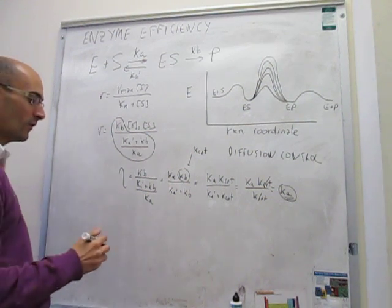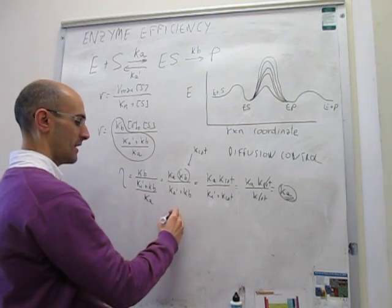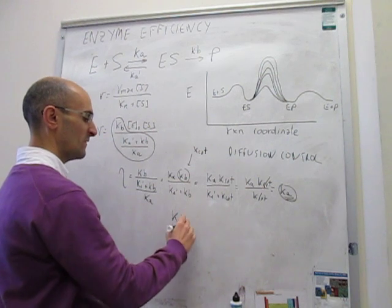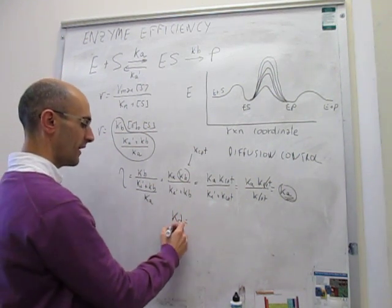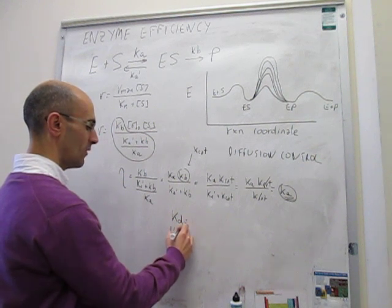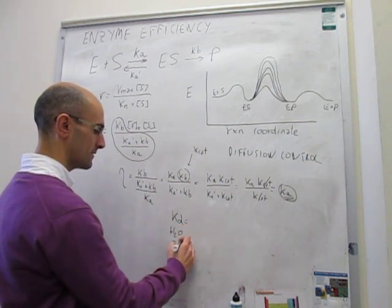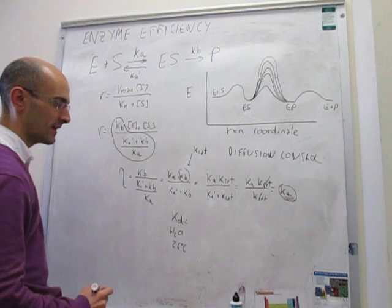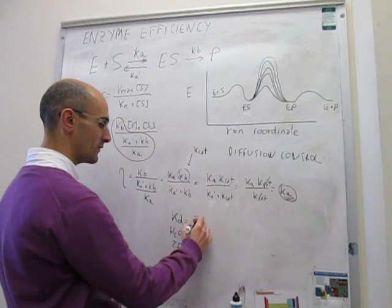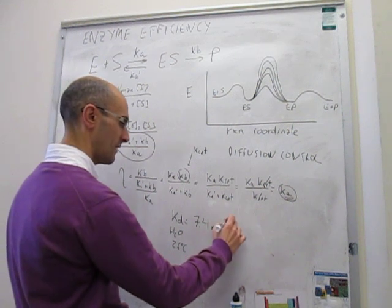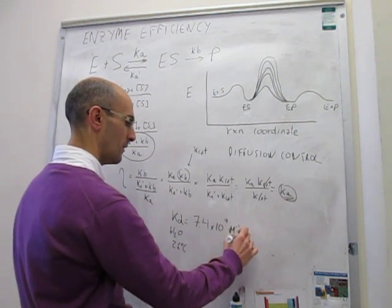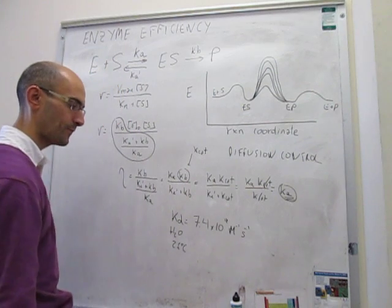Well, what we actually saw is that last chapter, there was an upper limit for diffusion control here. We actually calculated how much this number was for water at 25 Celsius. And what we actually came up with is a number, you can review this in your notes, of 7.4 times 10 to the 9 per molar per second.